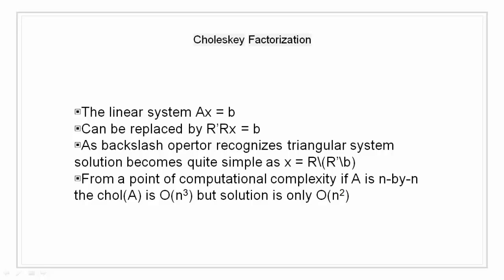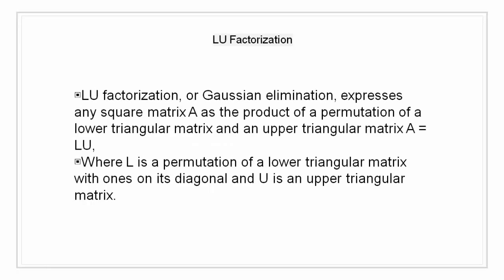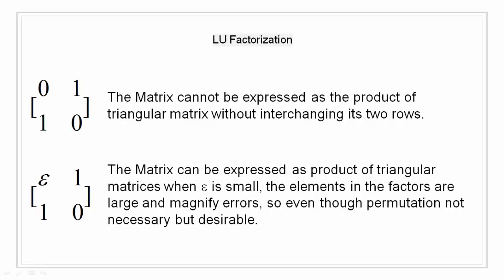The LU factorization. LU factorization or Gaussian elimination expresses any square matrix A as the product of a permutation of a lower triangular matrix and an upper triangular matrix. That is A is equal to LU where L is a lower triangular matrix and U is the upper triangular matrix. The permutations are necessary for both theoretical and computational reasons.